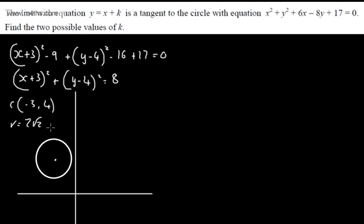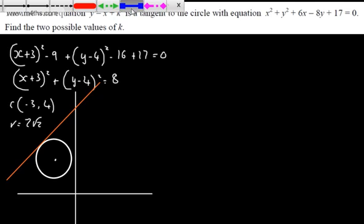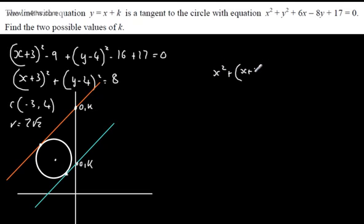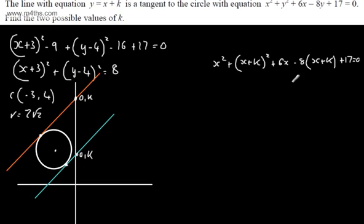We have two straight lines that could be tangents to this circle, both with gradient 1 since the equation is y equals x plus k. We're looking for two values of k where the line touches the circle. Substituting y equals x plus k into the original equation gives: x squared plus x plus k all squared plus 6x minus 8 times x plus k plus 17 equals 0. This is easier than substituting into the completed square form.